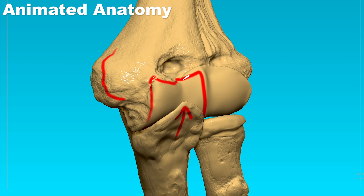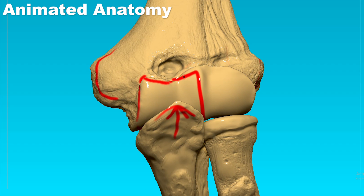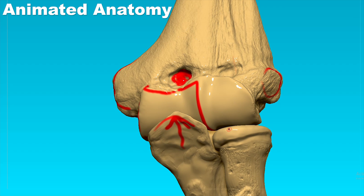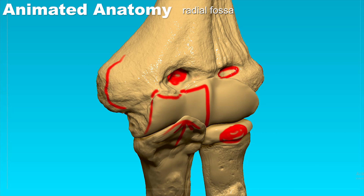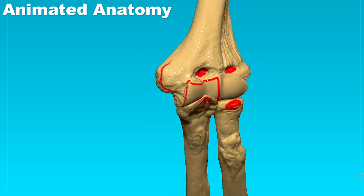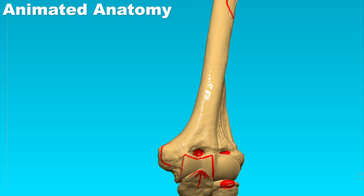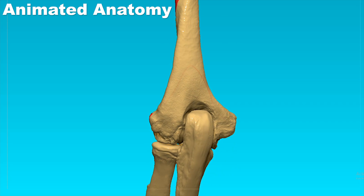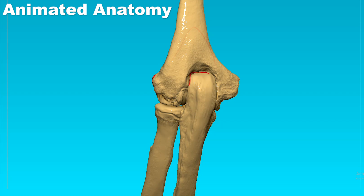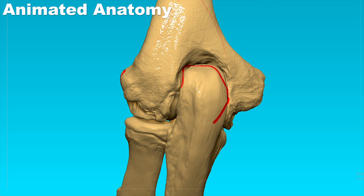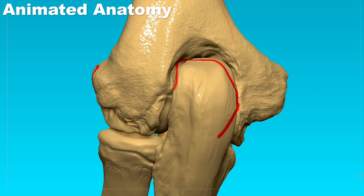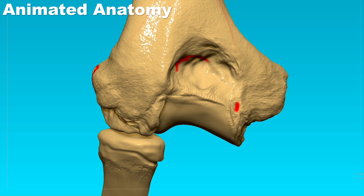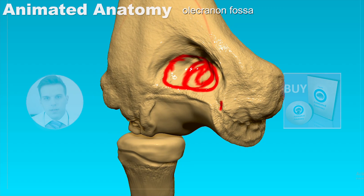Once the arm is flexed, the coronoid process of the ulna goes into the coronoid fossa, and because the radius is also protruding slightly, it can fit into the radial fossa. If we look at the bone from behind, we see the dorsal surface and one more process of the ulna entering another fossa — that is the olecranon process, which enters the large and deep olecranon fossa.